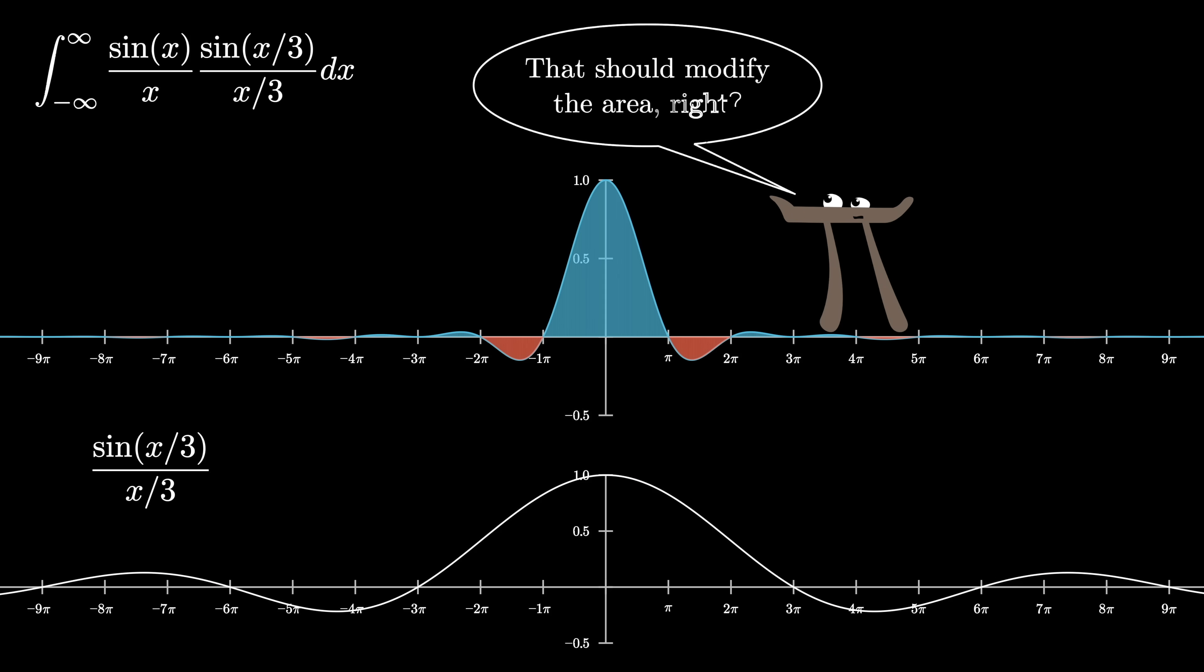And with any usual functions, you would expect this completely changes the area. You can't just randomly modify an integral like this and expect nothing to change. So already, it's a little bit weird that this result also equals pi, that nothing has changed. That's another mystery you should add to your list.